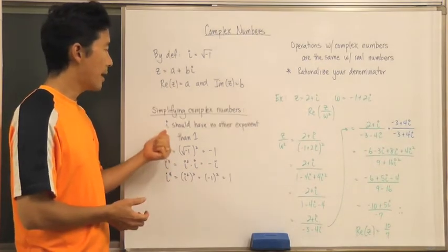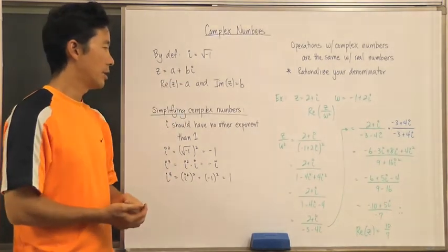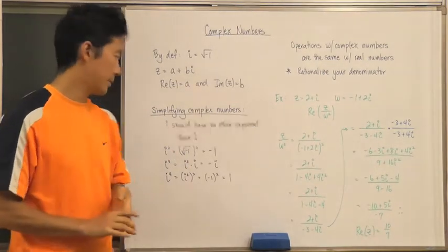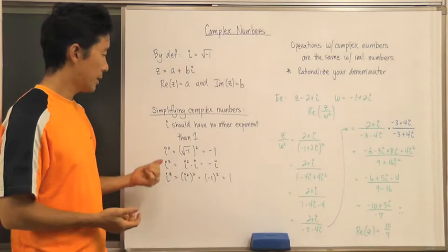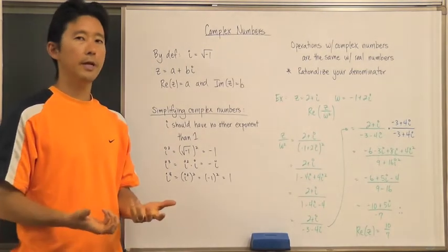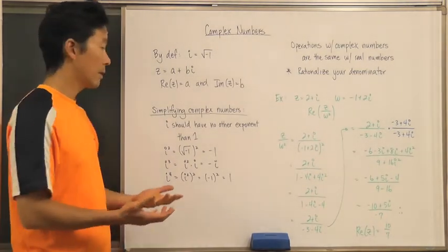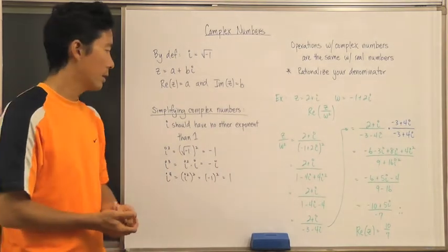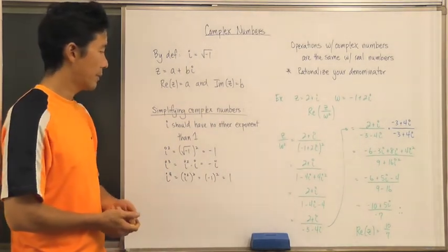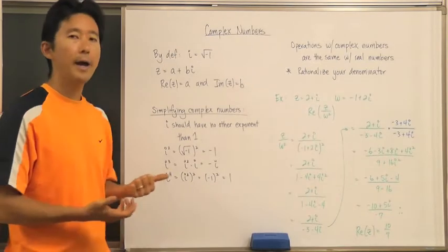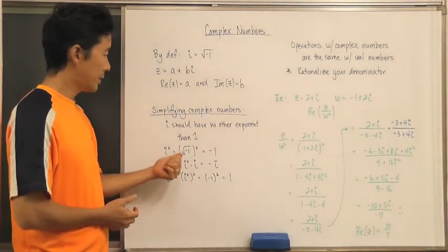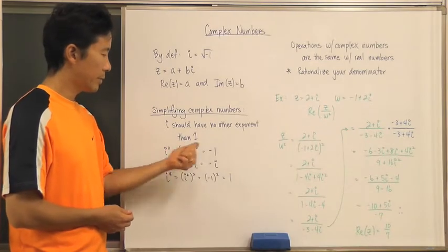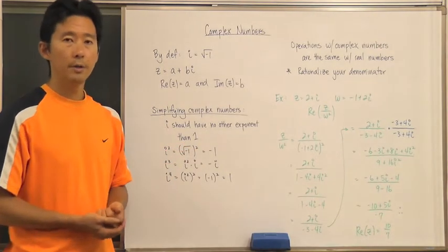When it comes to simplifying complex numbers, the key thing to remember is that i, the imaginary unit, should have no other exponent than one. We can always simplify higher powers: for example, i squared is the same as the square root of negative one, quantity squared, which equals negative one.